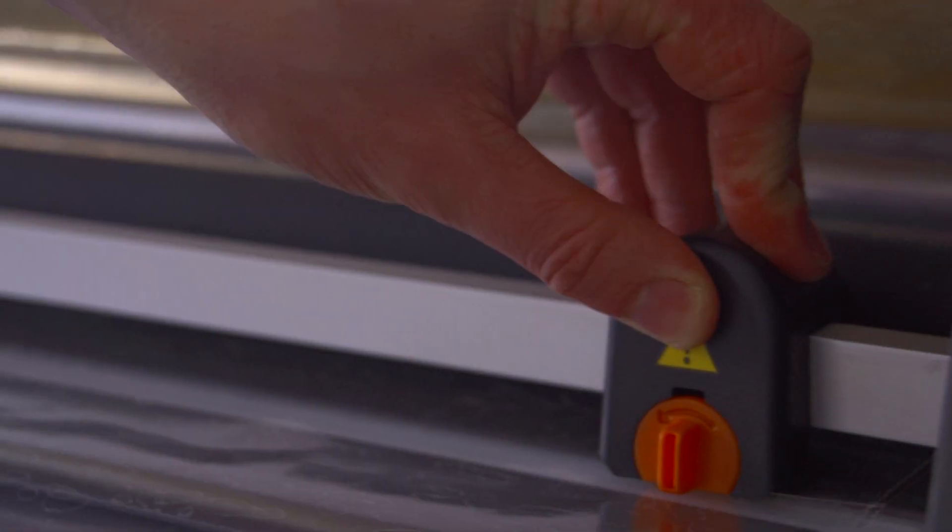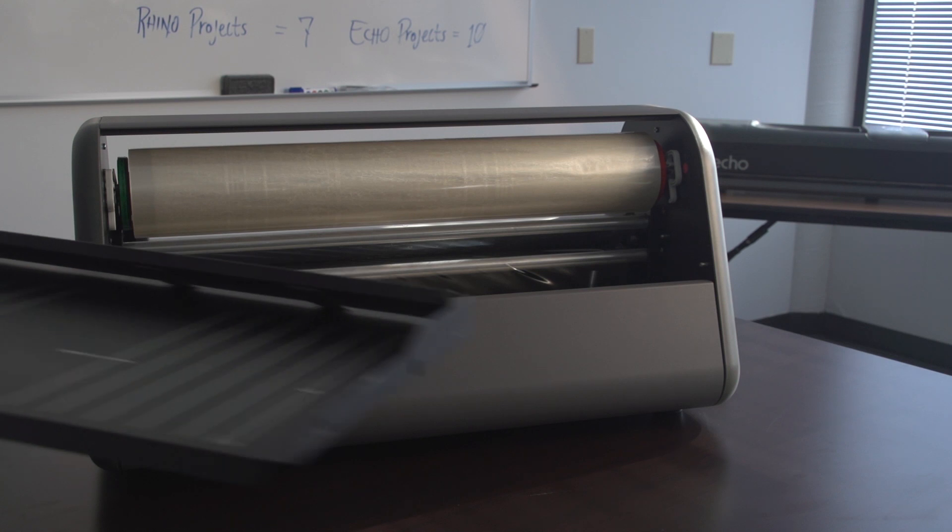Once the laminate feeds out smoothly, stop turning the crank and use the cutter to remove this leading material. Now flip up the lower panel at the front of your Rhino.